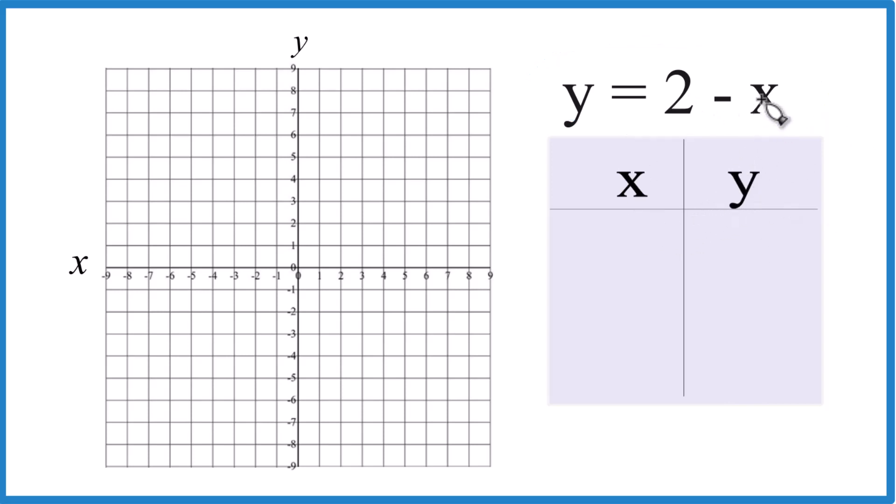So for y equals 2 minus x, we can put any value in for x, then we get a value for y, then we can graph it. That'll be on our graph here.